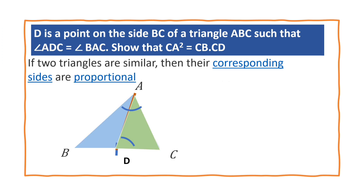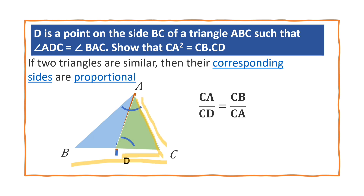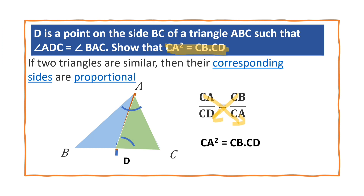If two triangles are similar, then their corresponding sides are in proportion. CA in triangle ABC corresponds to CD in triangle ADC, and CB in triangle ABC corresponds to CA in triangle ADC. Cross multiplying gives CA into CA equals CB into CD, that is CA square equals CB into CD. This is the result we wanted to prove.